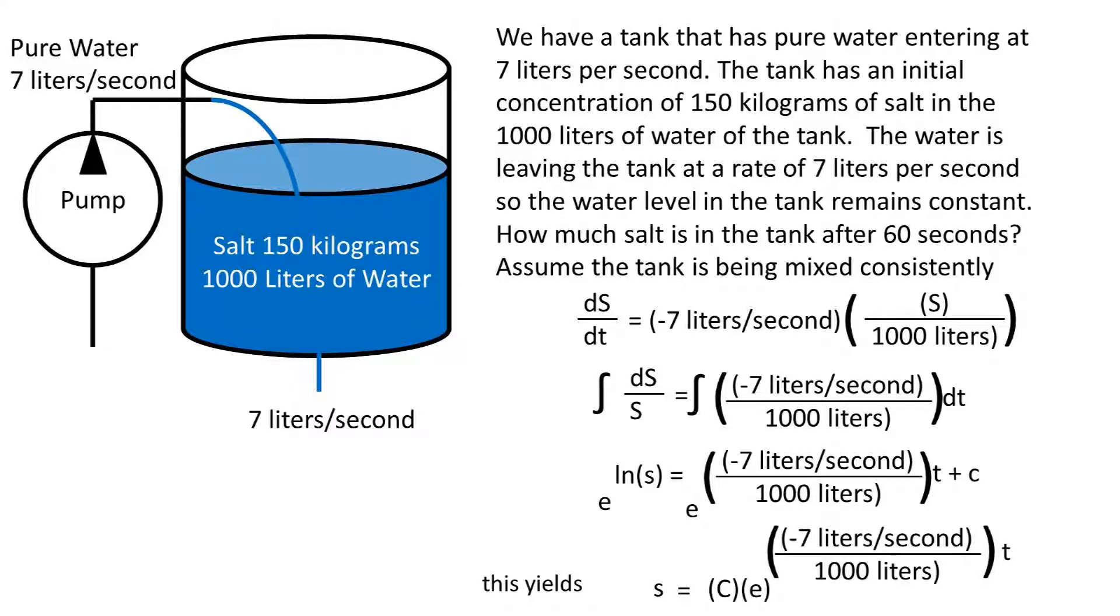S, or salt mass in kilograms, equals the c, or constant, which in this case is the initial mass of salt, times the Euler constant, or e, to the power of negative 7 liters per second, divided by 1,000 liters, times t, or time.